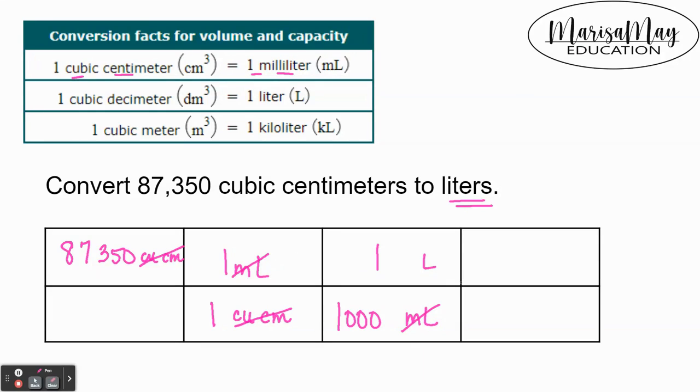Now we multiply across the top and multiply across the bottom, so that's 87,350 over a thousand. Now you can divide: 87,350 divided by a thousand gives us 87.35 liters.